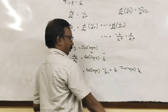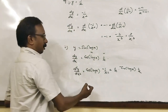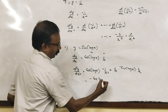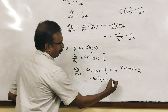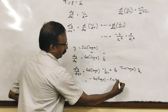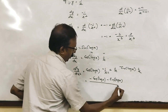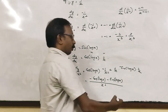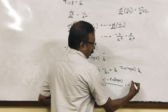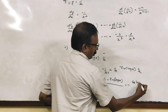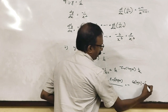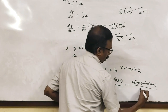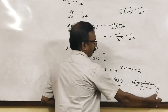Combining the terms, the answer is minus cos(log x) minus sin(log x) all divided by x². Or you can take the minus outside: minus of cos(log x) plus sin(log x) divided by x².